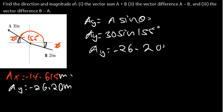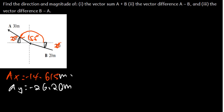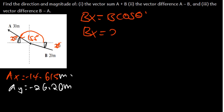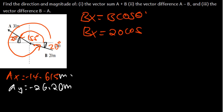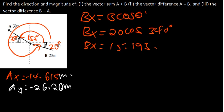Now let's resolve vector B into X and Y components. BX = B·cos(θ). B is 20. The angle: remember the angle must come from the positive X axis all the way to the vector. We have been given 20 degrees below the axis, so the angle is 360 minus 20, which is 340 degrees. So BX = 20·cos(340°) = 15.193.